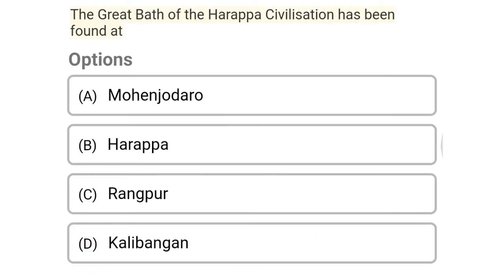Next question: the great grid of Harappa civilization has been found in — option A, Mohenjodaro; option B, Harappa; option C, Rangapur; option D, Kalibangan. The correct answer is option A, Mohenjodaro.